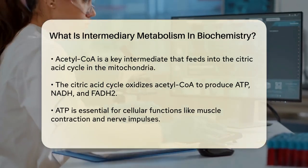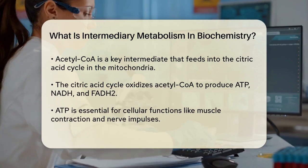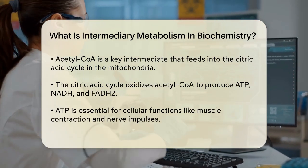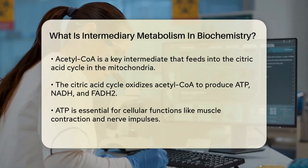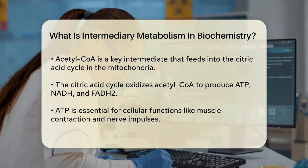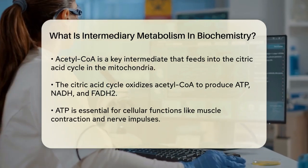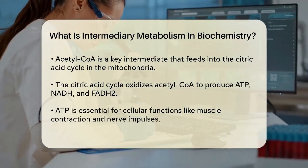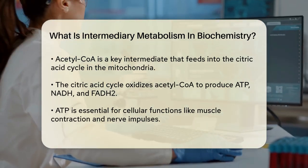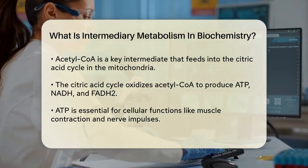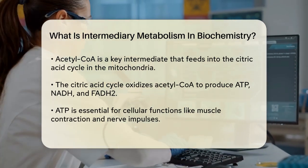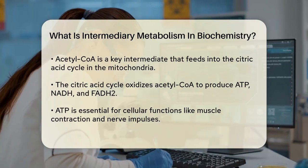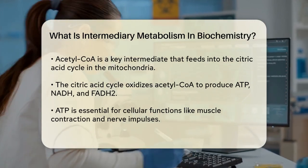In the citric acid cycle, acetyl-CoA is oxidized to produce energy in the form of ATP, along with other important molecules like NADH and FADH2. This energy is crucial for cellular functions, including muscle contraction, nerve impulses, and the synthesis of new cellular components.